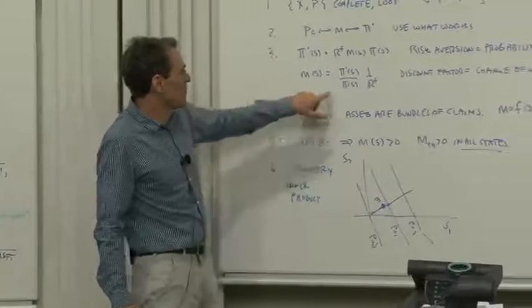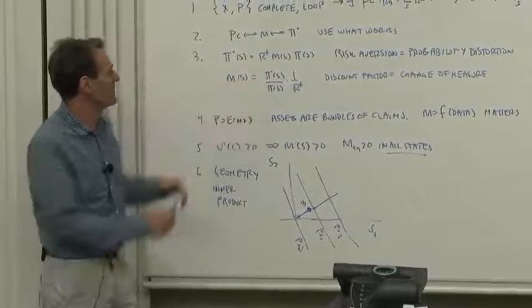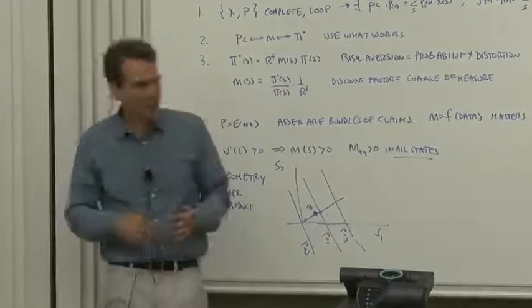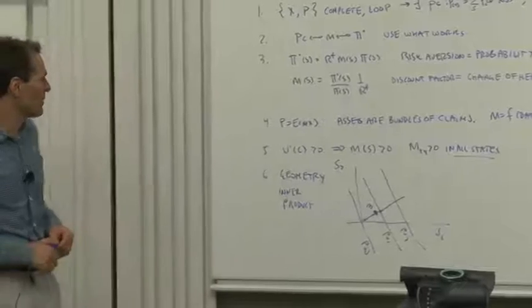Another formula we looked at, the discount factor is the ratio of transformed to original probabilities. So the discount factor is the same thing as the change of measure from transformed to original probabilities.